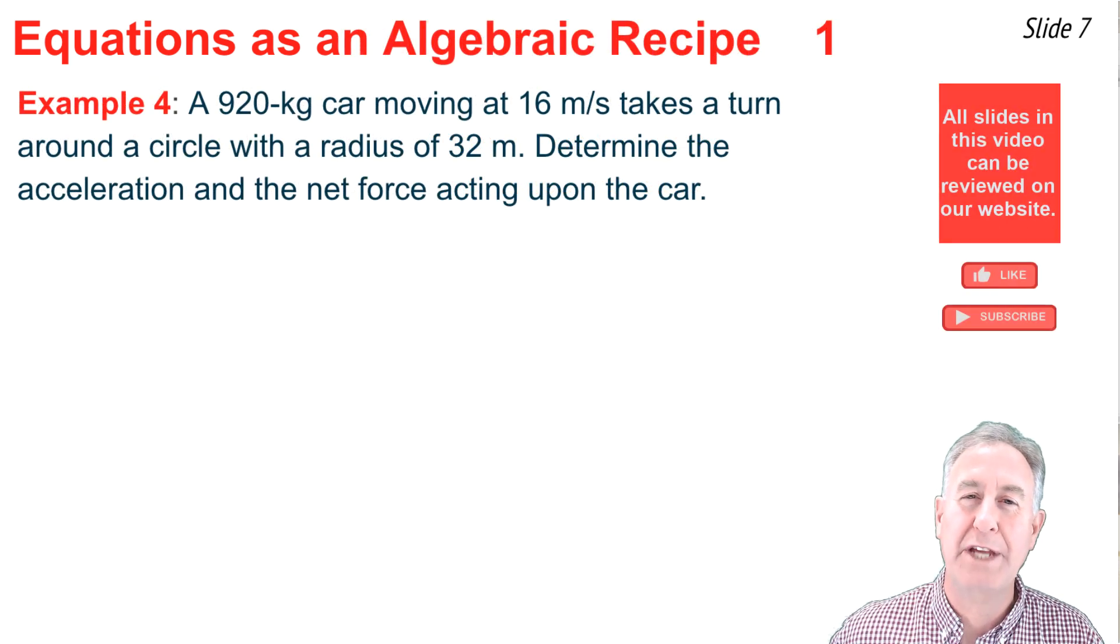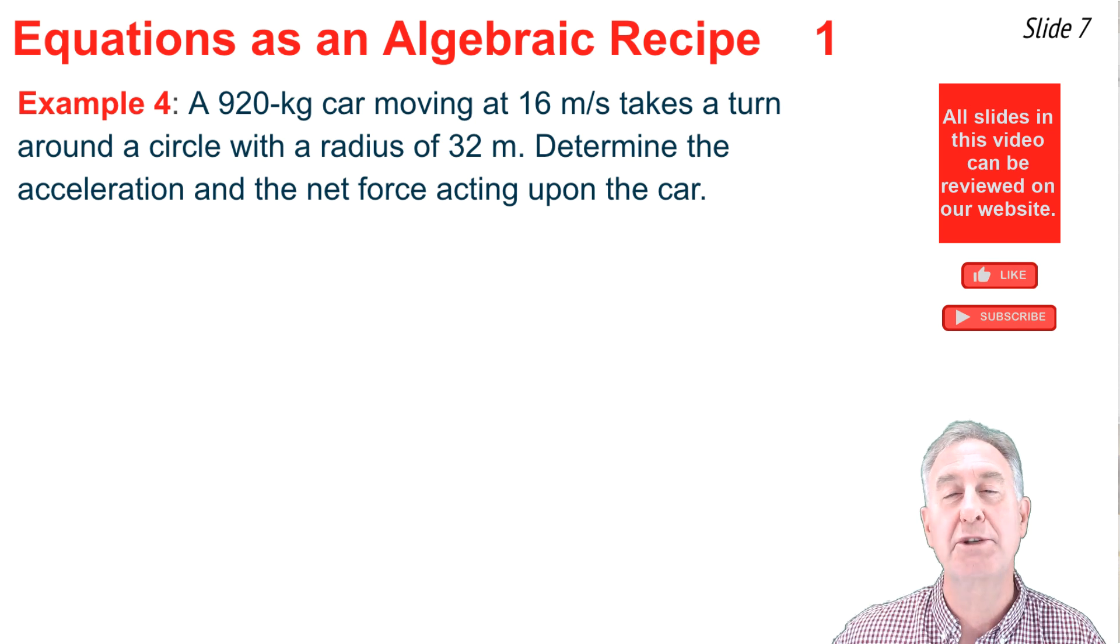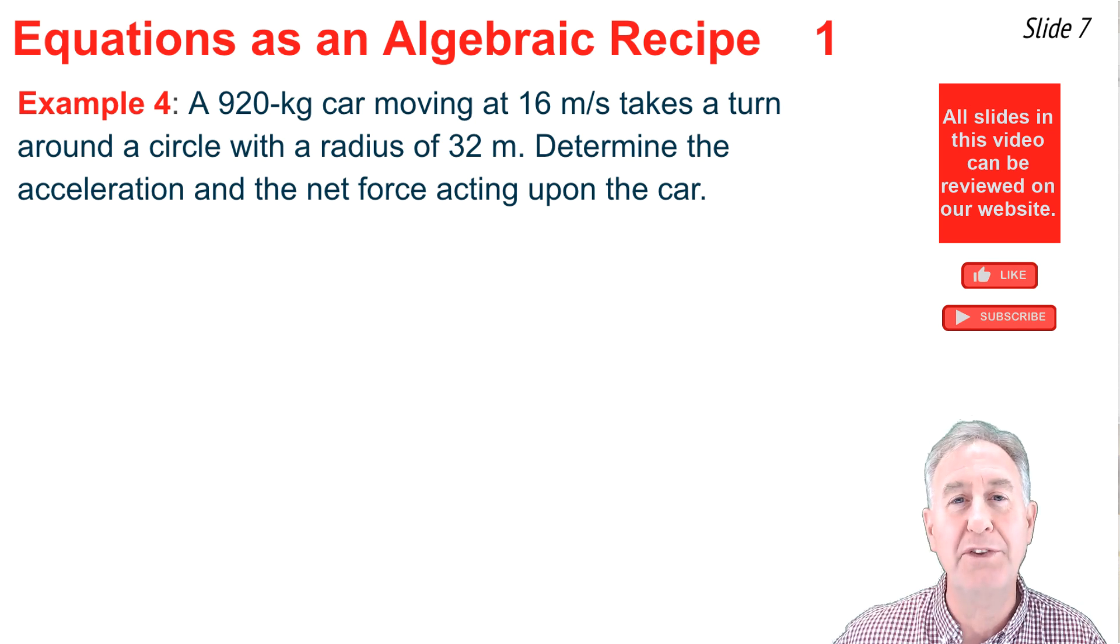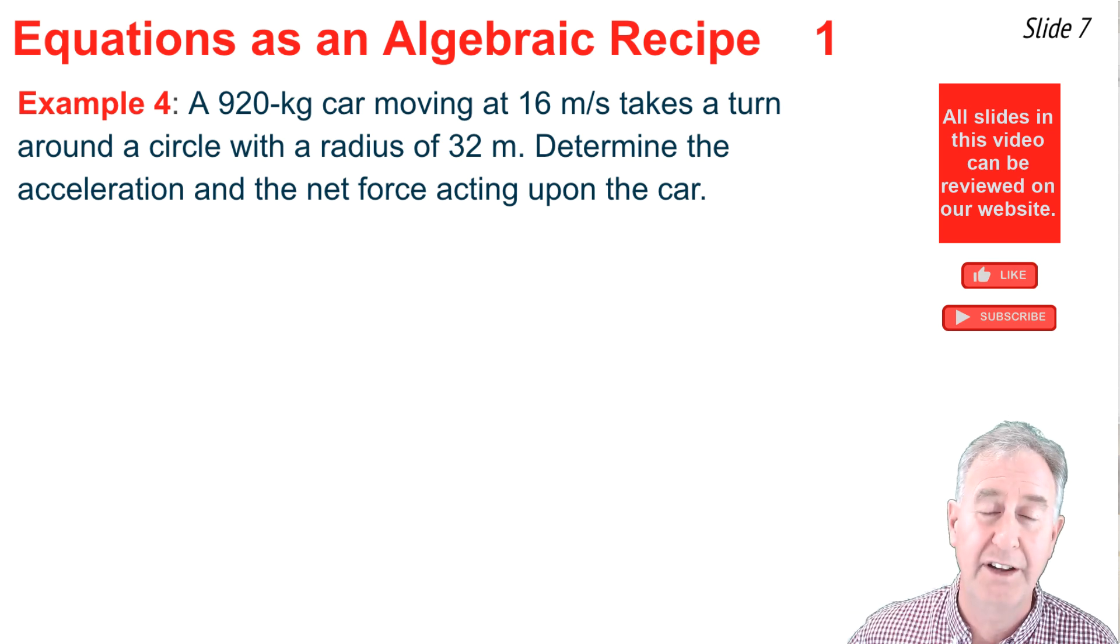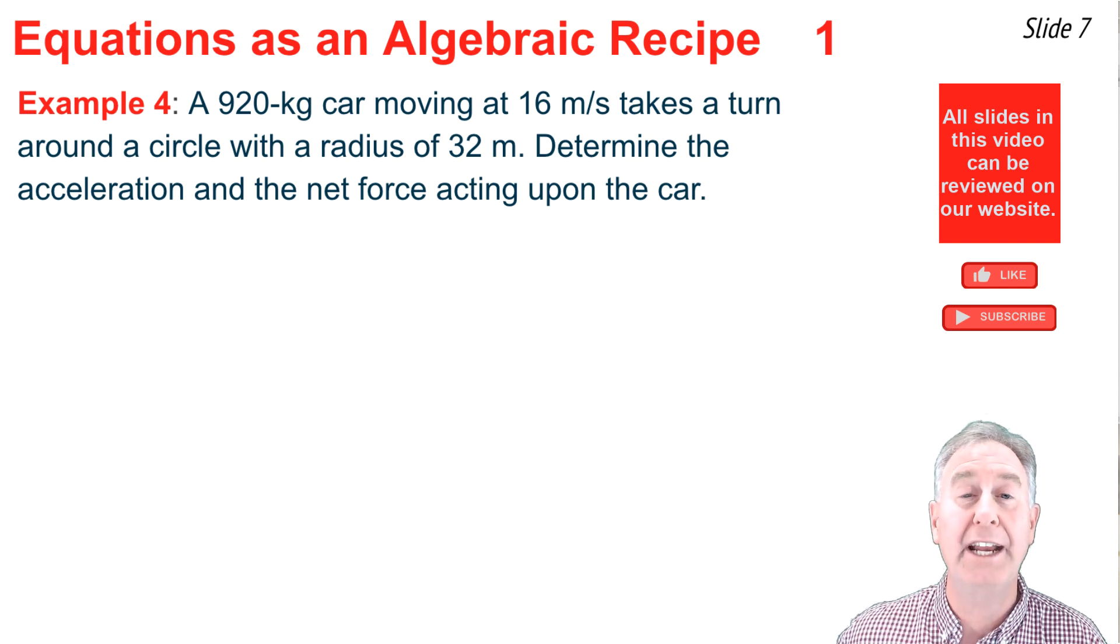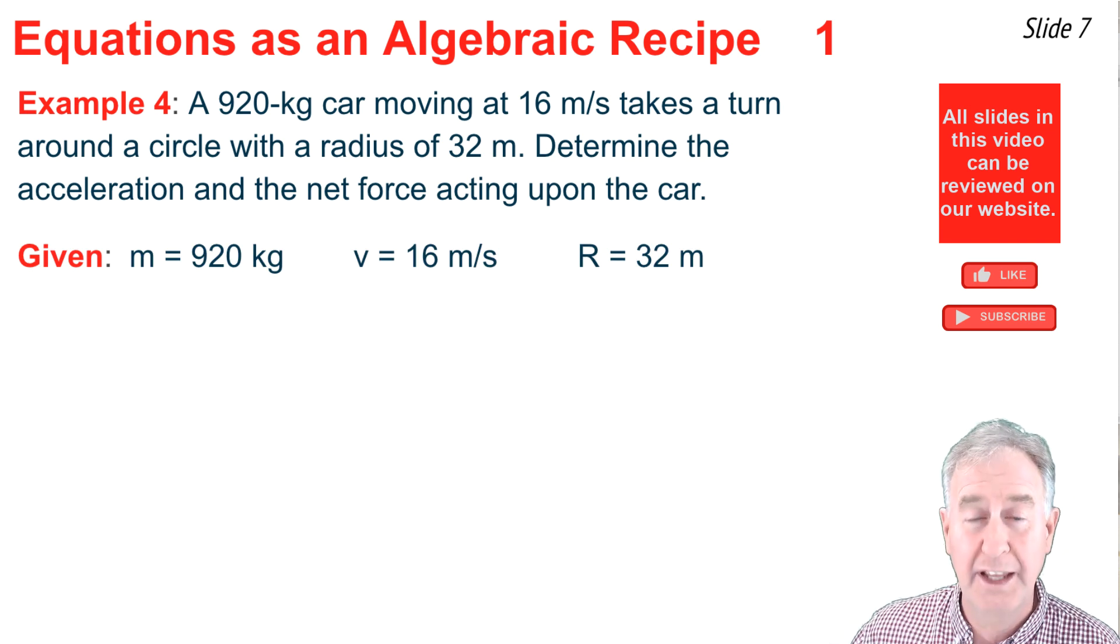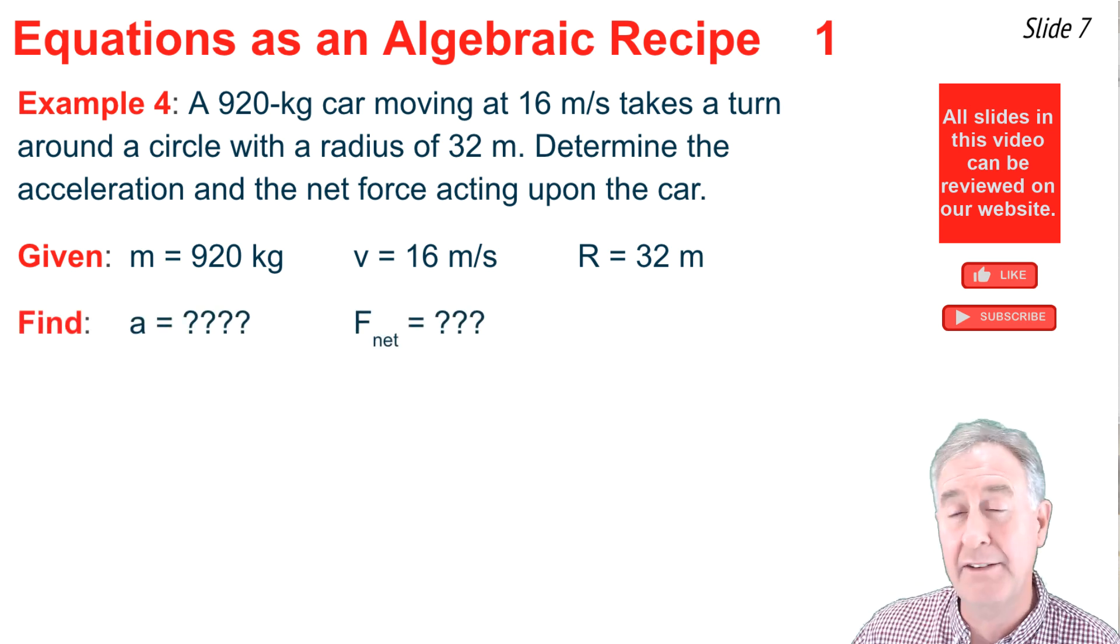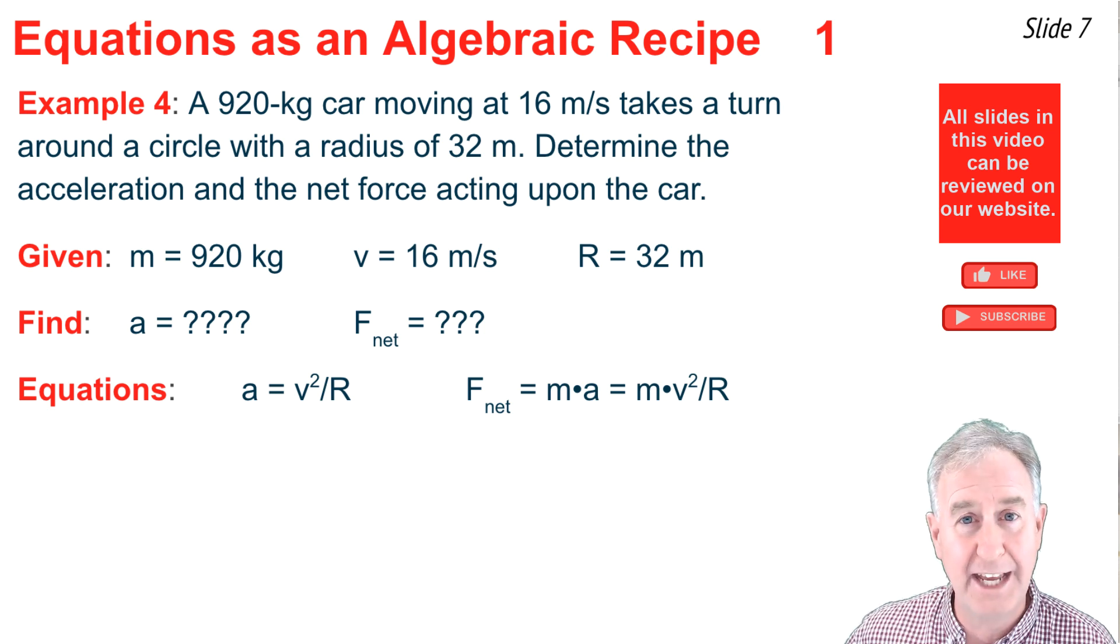In my last two examples, I'll be using equations as a sort of algebraic recipe in order to solve a problem. In example 4, a 920 kilogram car is moving at 16 meters per second and takes a turn around the circle with a radius of 32 meters. Determine the acceleration and net force of the car. So, like any problem in physics, I'll begin by identifying what I know and what I'm looking for. I know the mass of the car, I know the speed of the car, and I know the radius of the turn. What I'm looking for is the acceleration and the net force. My equations are a equal v squared over r, and f net equal m times a, or m times v squared over r.